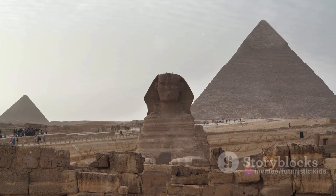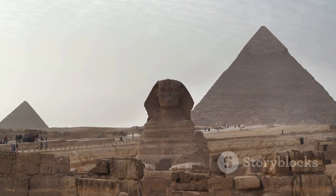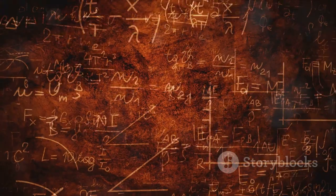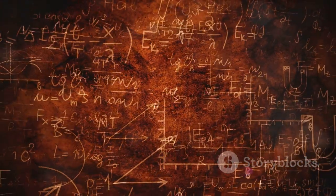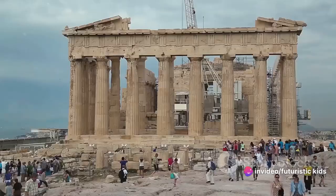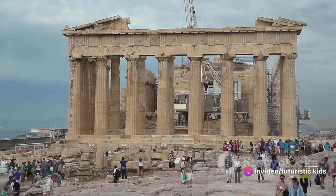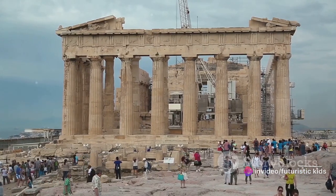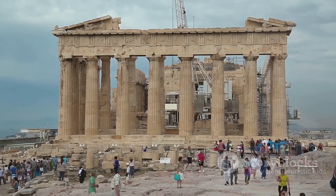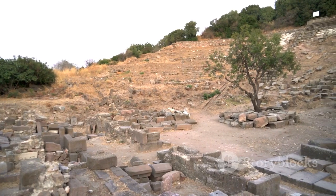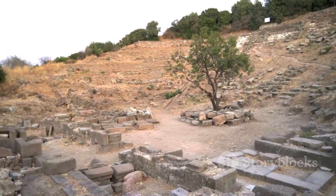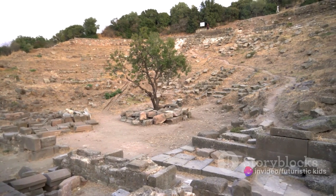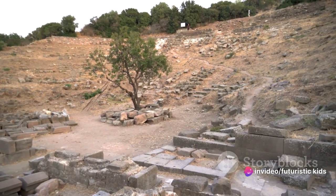It wasn't just bricks and mortar that these civilizations gifted to the world. They were pioneers in the realms of art, science, mathematics and philosophy. The ancient Greeks, for instance, laid the foundations for modern democracy, philosophy and scientific thought. The Indus Valley civilization, on the other hand, introduced us to urban planning and sanitation systems.